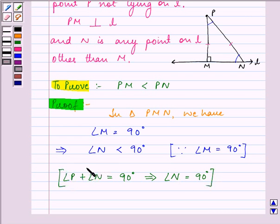This shows that angle N is less than angle M because angle N is less than 90 degrees but angle M is equal to 90 degrees.